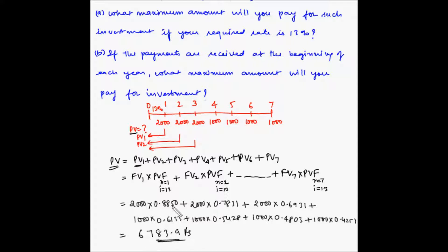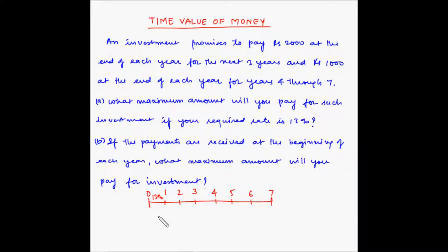The answer comes out to rupees 6,783.9. So basically, an amount of rupees 6,783.9 invested today at 13% interest per annum will allow us to withdraw this series of cash flows. Now let us move to Part B.